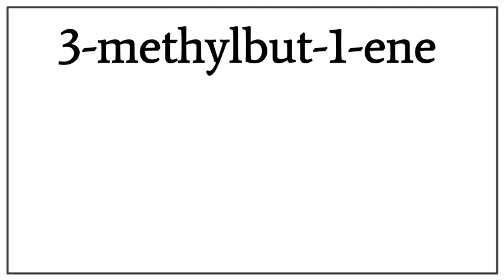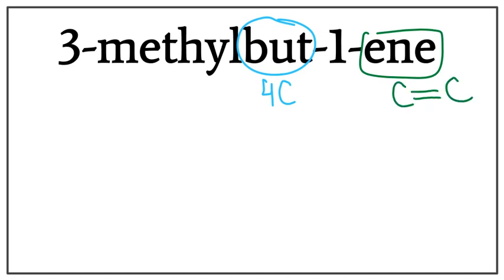Let's draw the structure for 3-methylbut-1-ene or 3-methylbutene. But right here tells us that there are four carbons present in the longest carbon chain. Ene right here tells us that this is an alkene, meaning that there is a double bond present between the carbons.